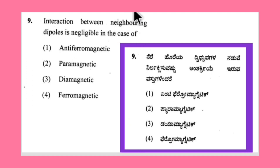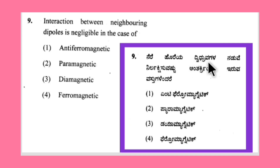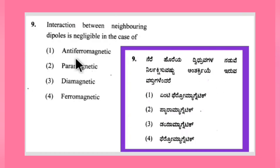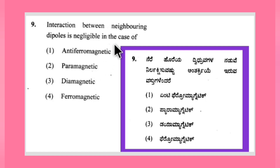Question number 9: interaction between neighboring dipoles is negligible in the case of which material — antiferromagnetic, paramagnetic, diamagnetic, or ferromagnetic? We have already studied the magnetic classification of substances, covering paramagnetic, diamagnetic, ferromagnetic, and antiferromagnetic materials.